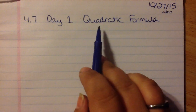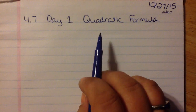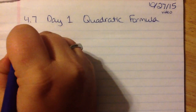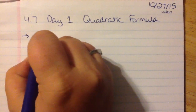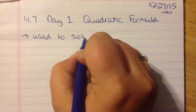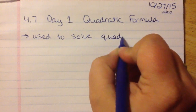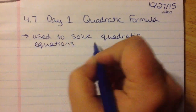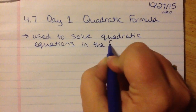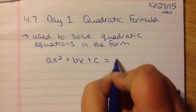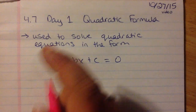We've been learning about lots of different ways to solve quadratics, and today we're going to talk about a second way that solves every single quadratic you can have. We talked about completing the square, which can solve any quadratic, and this is the quadratic formula. It can also solve any quadratic. The quadratic formula is used to solve quadratic equations in standard form: ax squared plus bx plus c equals zero. Remember, it has to be equal to zero before you start.